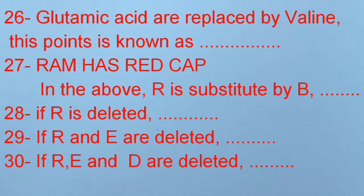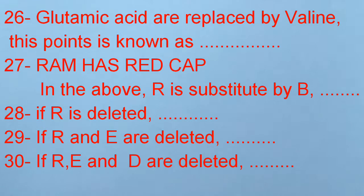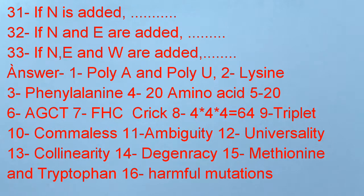Number 26: When amino acids are replaced by valine, this point mutation is known as ___. Number 27-33: Questions about reading frame shifts — if R is substituted, deleted, or multiple bases R, E, D are deleted; and if N, N and E, or N, E and W are added, what results?